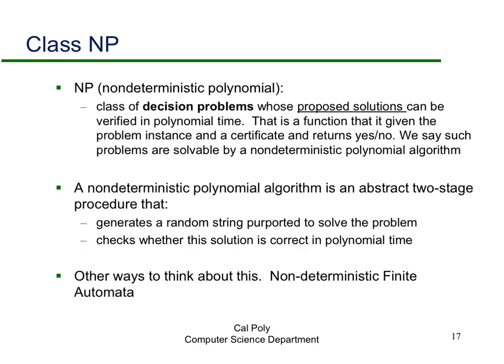Remember what we mean by NP. The characterization of NP is that there are decision problems whose proposed solutions can be verified in polynomial time. They may or may not be solvable in polynomial time, but they can be verified. Practically, given a problem instance and some certificate or proposed solution, there's a function that returns yes or no in polynomial time, indicating whether the certificate is an actual solution.